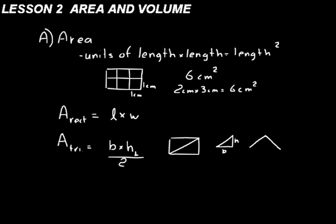Look at this triangle. We'd call this side the base B, and the height perpendicular to the base is that distance right there. You have to be careful with triangles — the book and your test will always give you that height perpendicular to the base. If it's not readily apparent, you look for that perpendicular height drawn out to the side of the triangle.